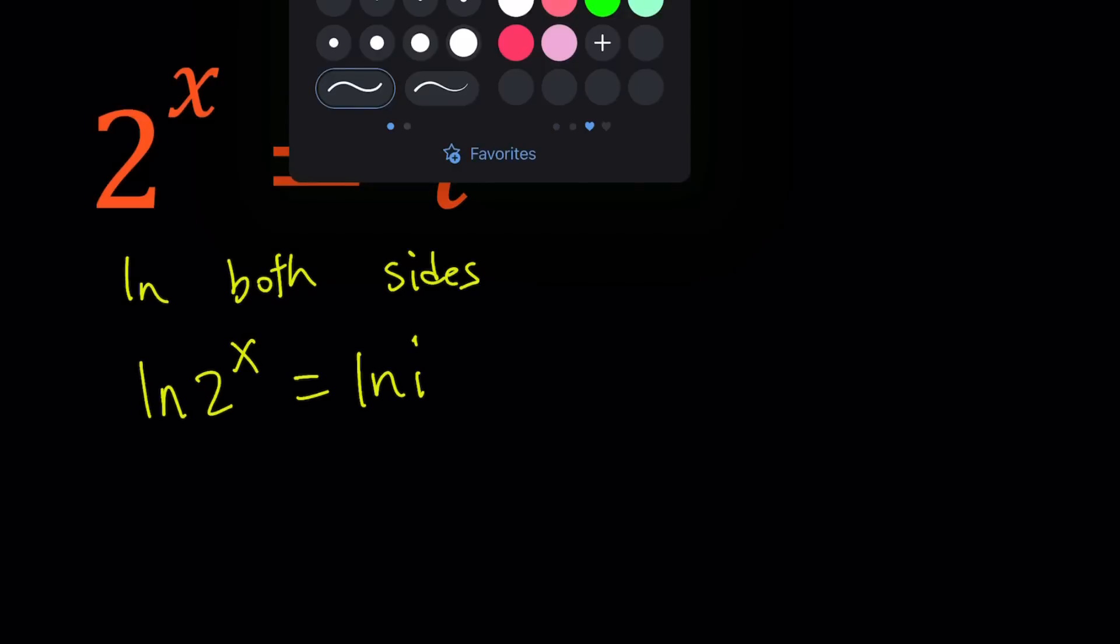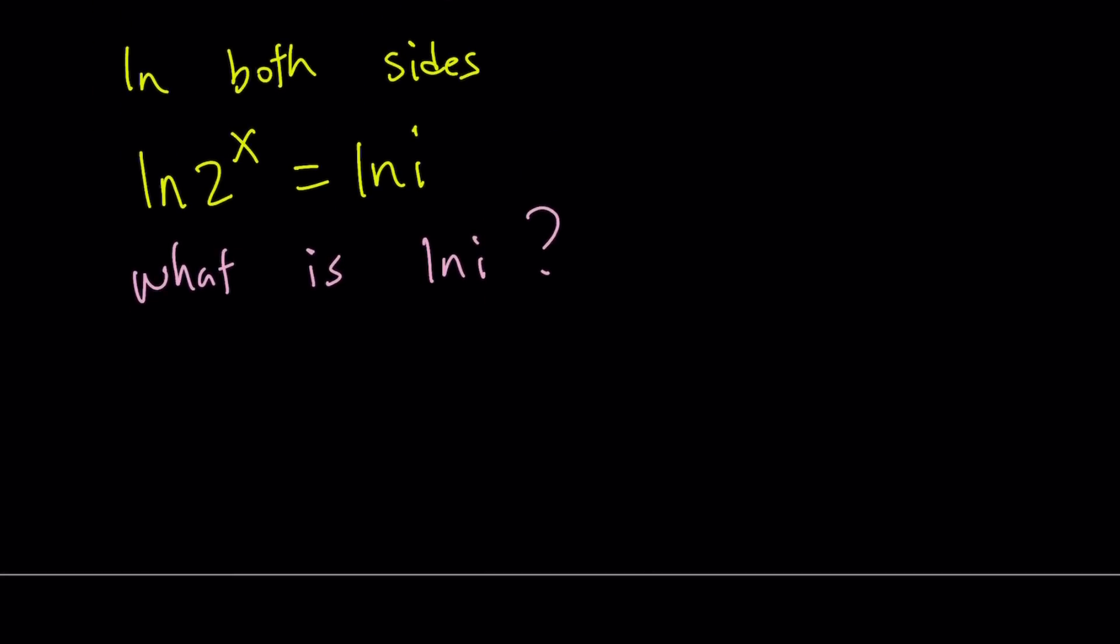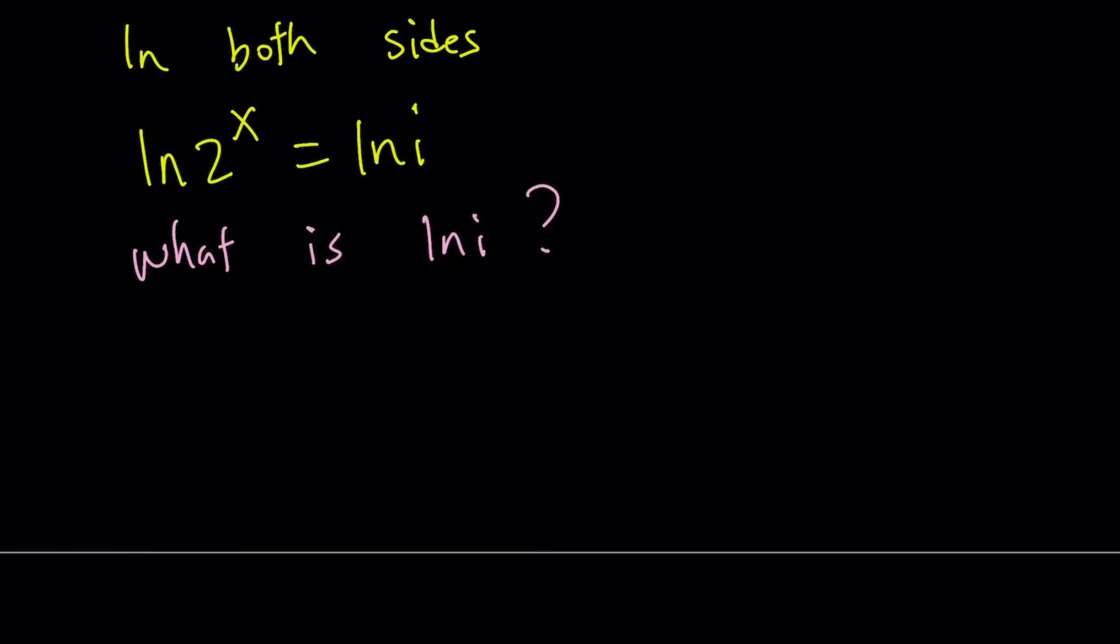So let's go ahead and explore that a little bit. i is a complex number. Is its ln going to be a complex number too? Let's find out. Thanks to Euler, one of the greatest mathematicians, in my opinion the greatest mathematician, we have e to the power i pi equals negative 1. That's a really beautiful identity.